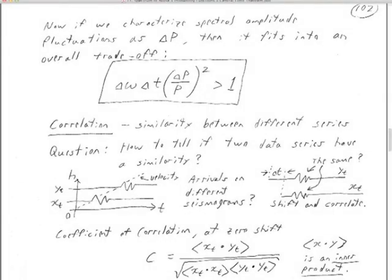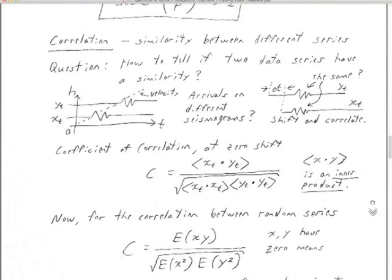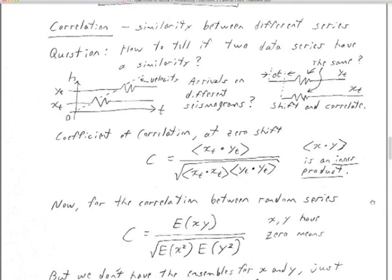We're finishing up Notes 11, page 102. We have just combined essentially the three different uncertainty principles and trade-offs that we've been working on into one. Now I want to get into the central limit theorem. First, I've got to introduce probability functions. But before that, as Clarabaut loves to do, we have a little example of how we look at all this with respect to exploration seismograms.